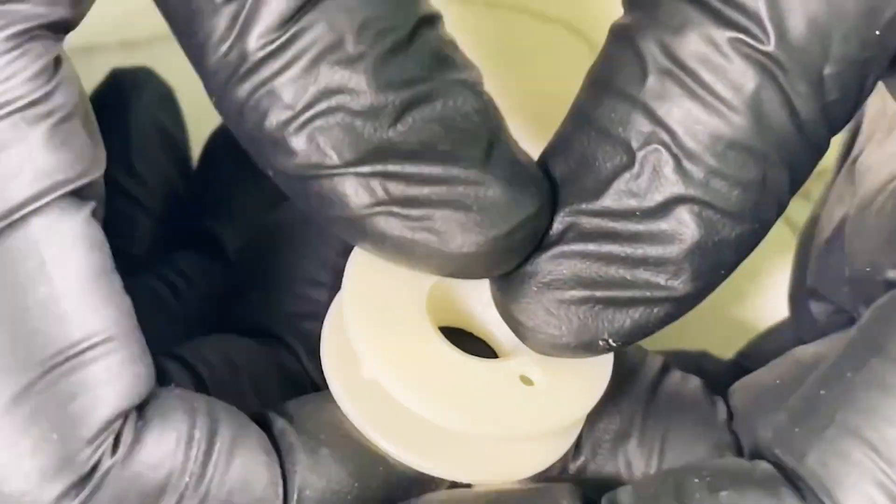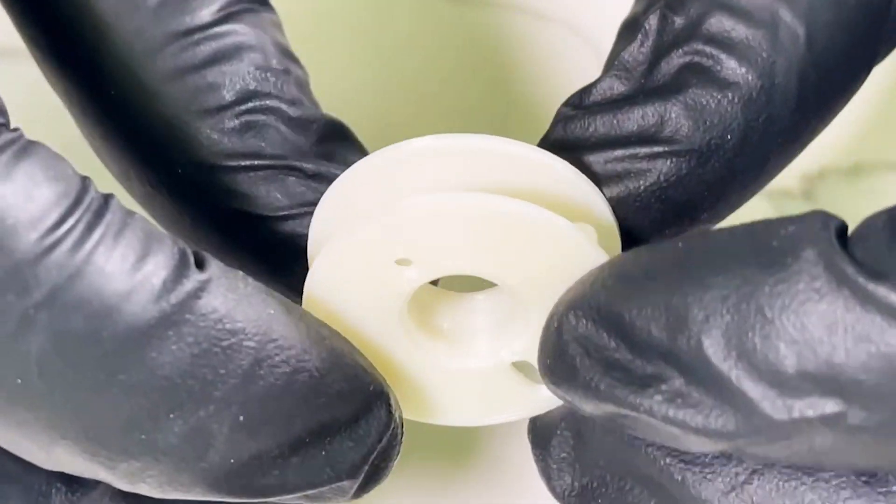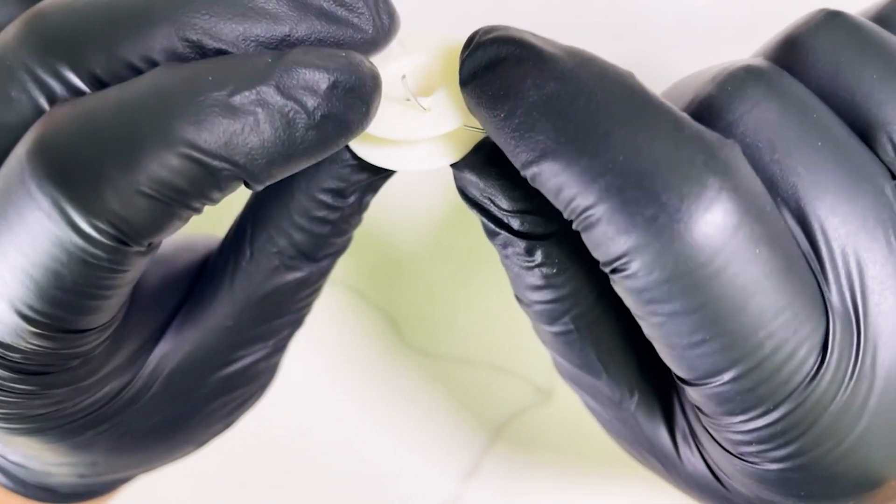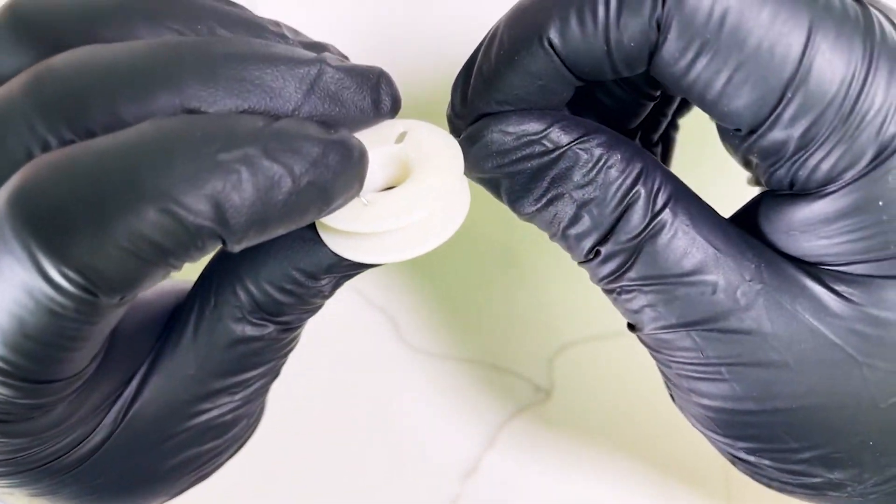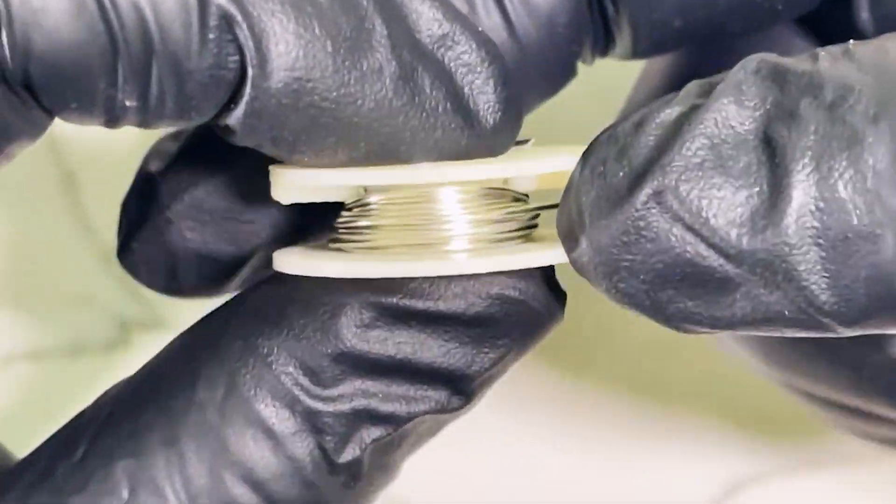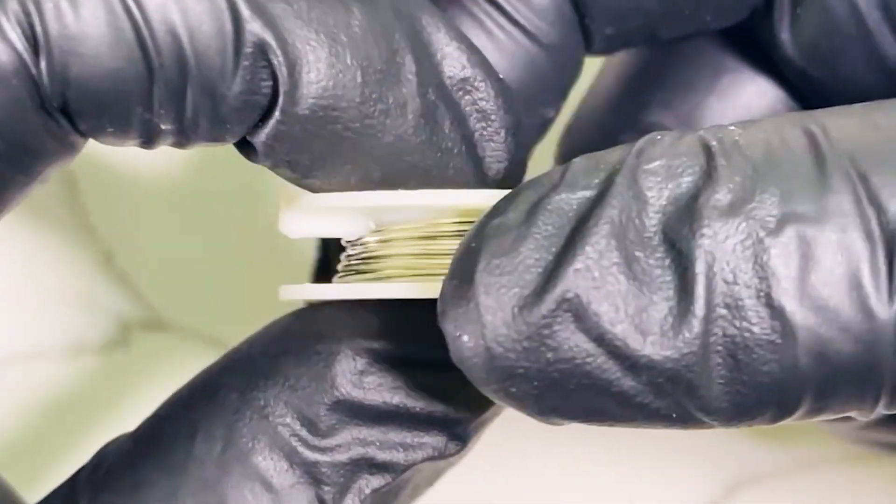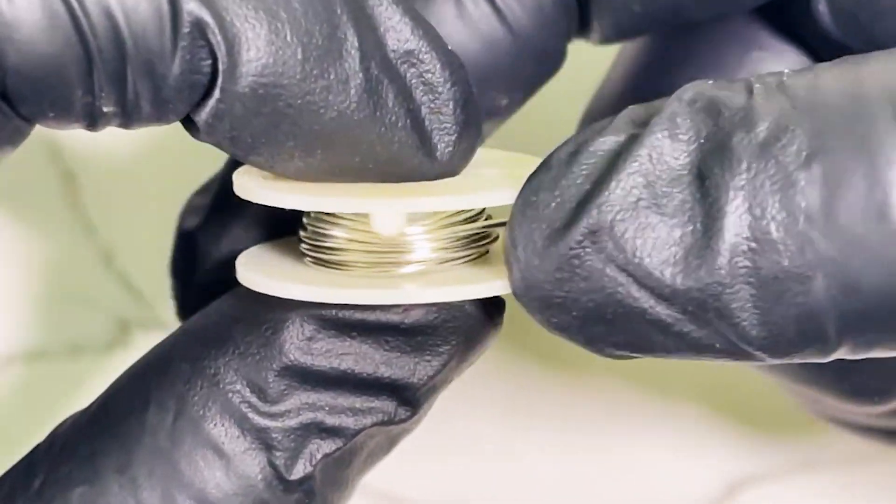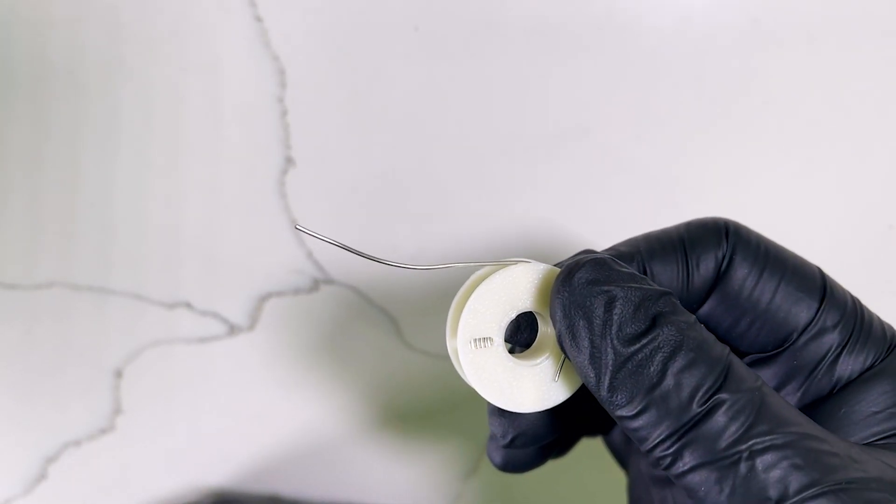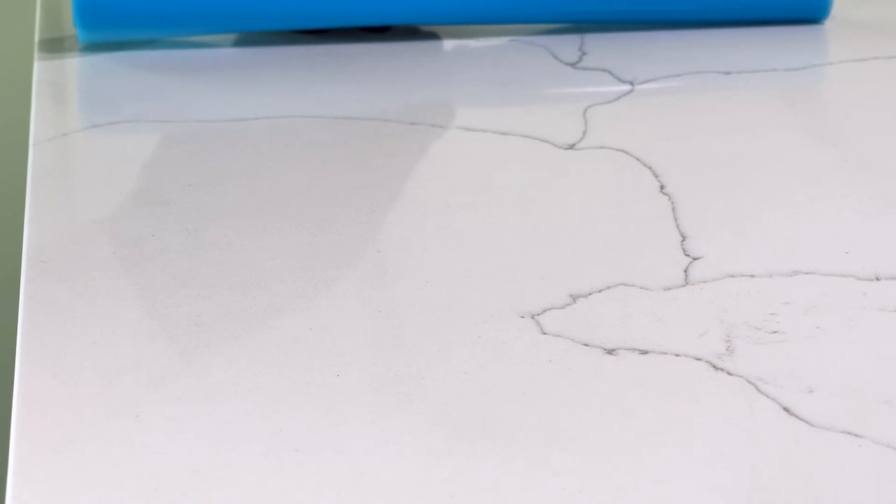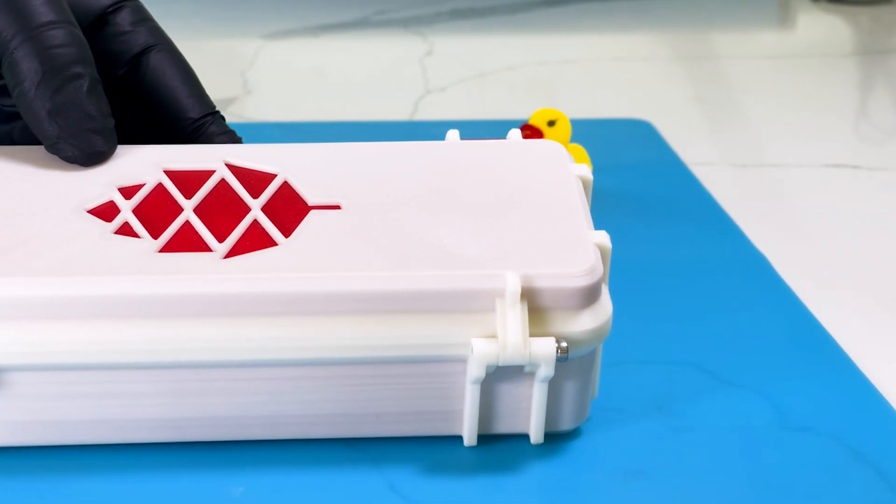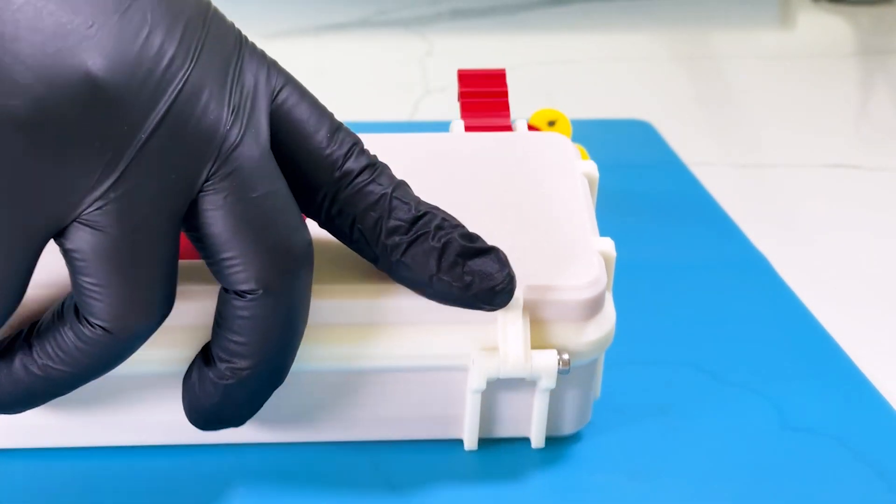One thing that did impress me about the reels is just how much material you can spool into them. Like they can take a lot of solder wire and a lot of desoldering wick, which I realized I ran out of pretty much during the making of the video. But they can take a lot. I couldn't even fill my reel up—and I mean I have more solder wire—but I got bored, outright bored, of just winding the thing before I reached the very cap of what it could hold. So I have no idea how much, but it's at least a couple meters easily.